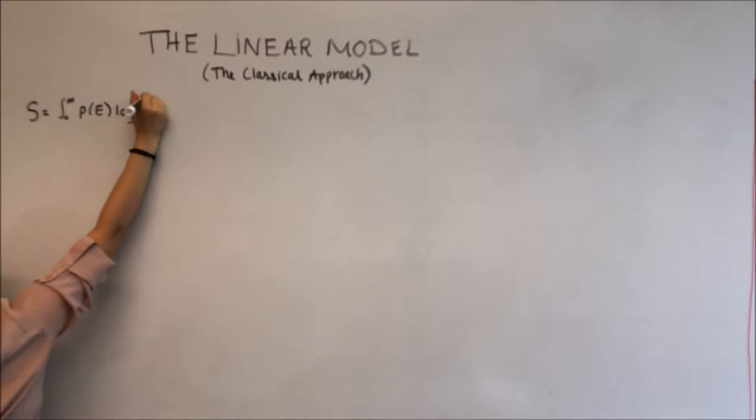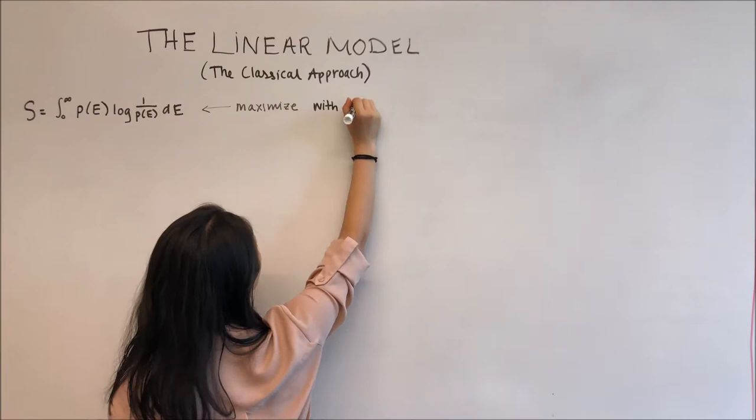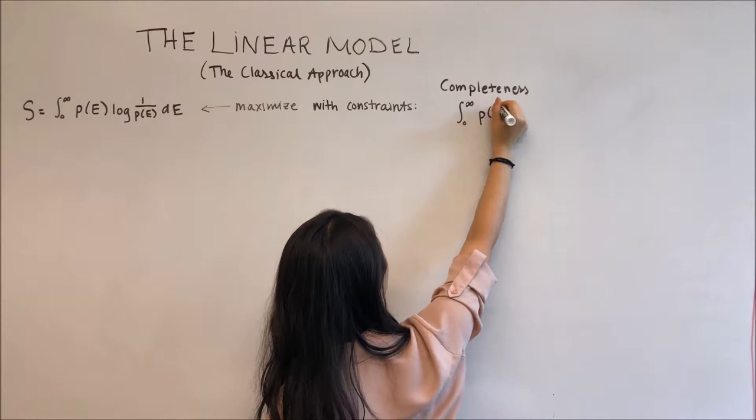Using Lagrange multipliers, we can attain the probability distribution for the linear model from first principles. We want to maximize the continuous Shannon entropy using constraints of completeness and of mean value existence.